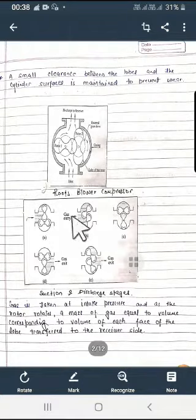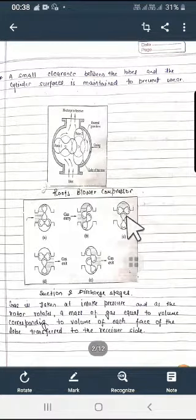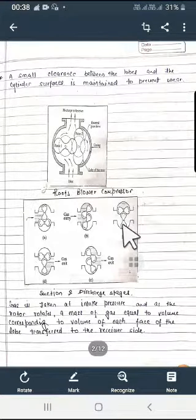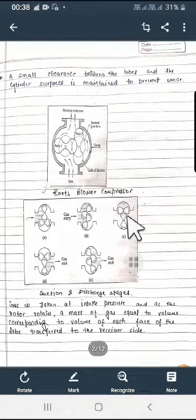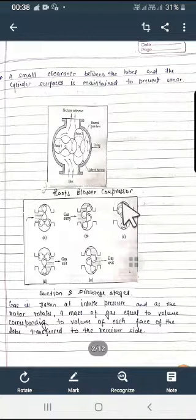Now what will happen in the next stage? With the further movement of the first rotor as it moves in clockwise direction, second rotor rotates in the anticlockwise direction. At this stage some high pressure gas will rush back from the receiver and it mixes with the volume of air until the pressure is equalized.